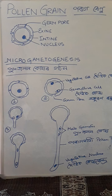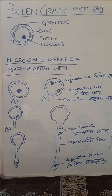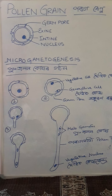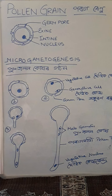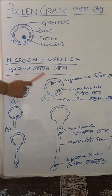Now let's look at male gamete formation from the pollen grain structure. First of all, the cell undergoes development. What happens inside the nucleus? This leads to the formation of the vegetative cell.